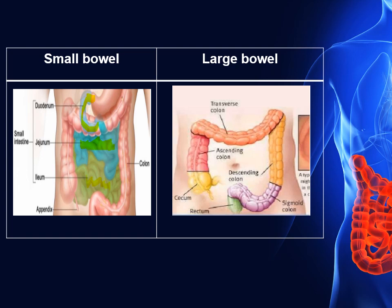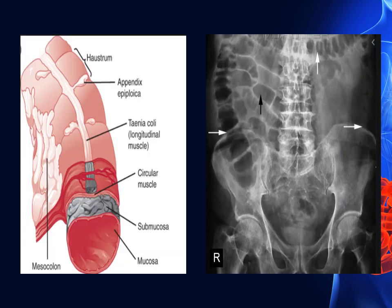The large bowel also has a characteristic appearance secondary to the taenia coli. The taenia coli is a longitudinal muscular band on the surface of the colon, which is shorter than the colon by 30 cm. It is the cause of the characteristic haustration or sacculation of the large colon, which gives a characteristic appearance on plain X-ray.